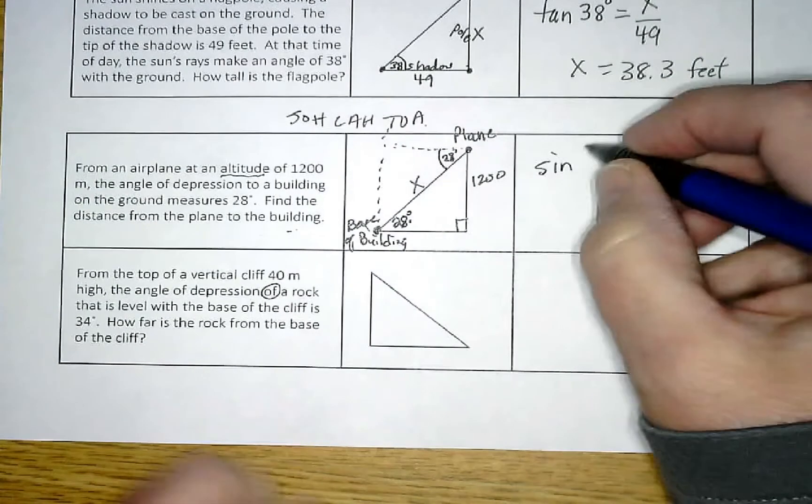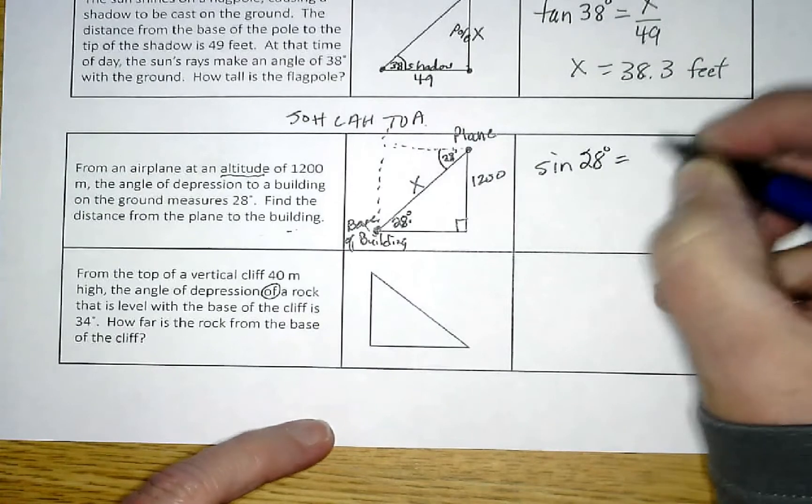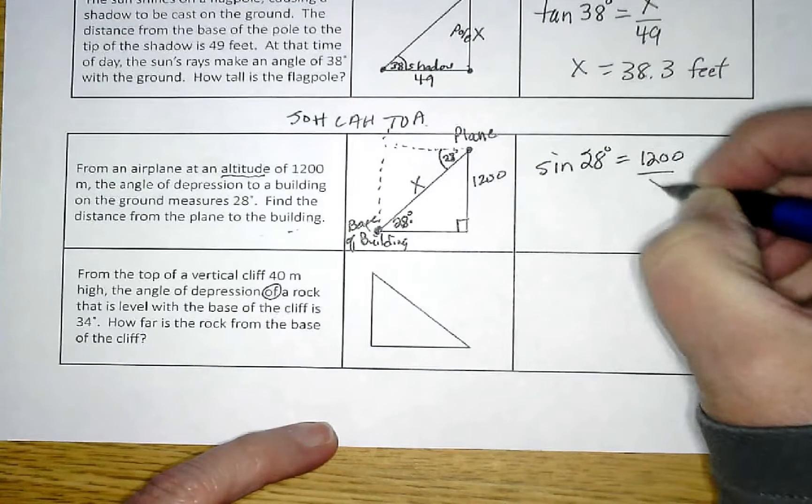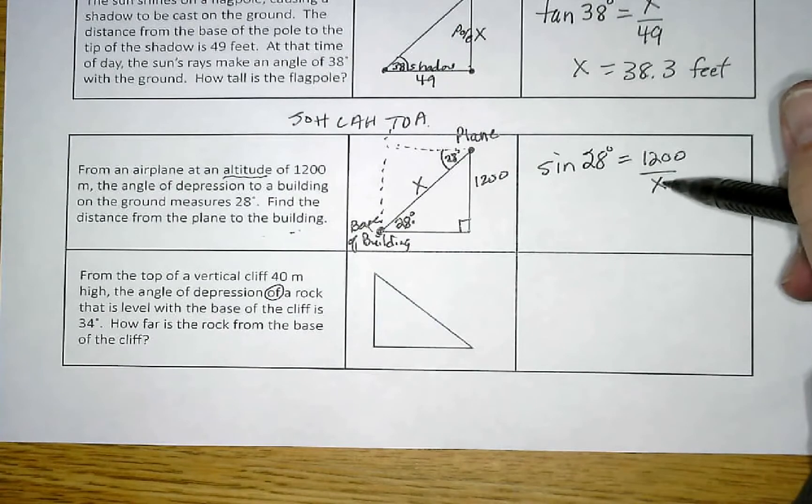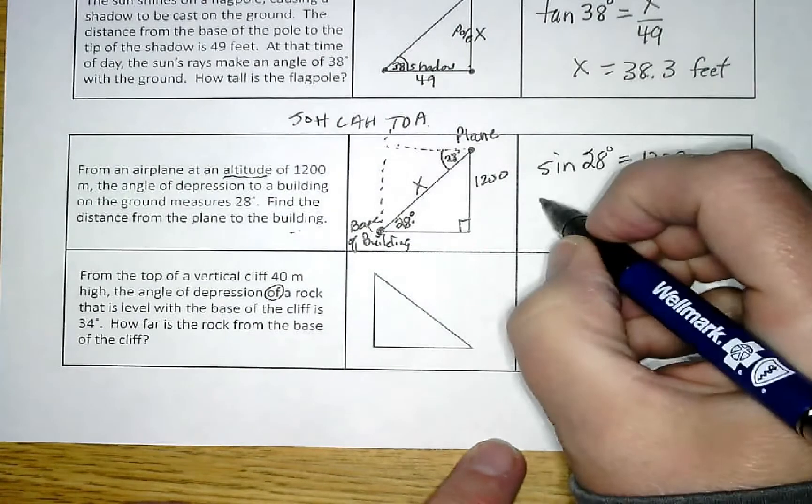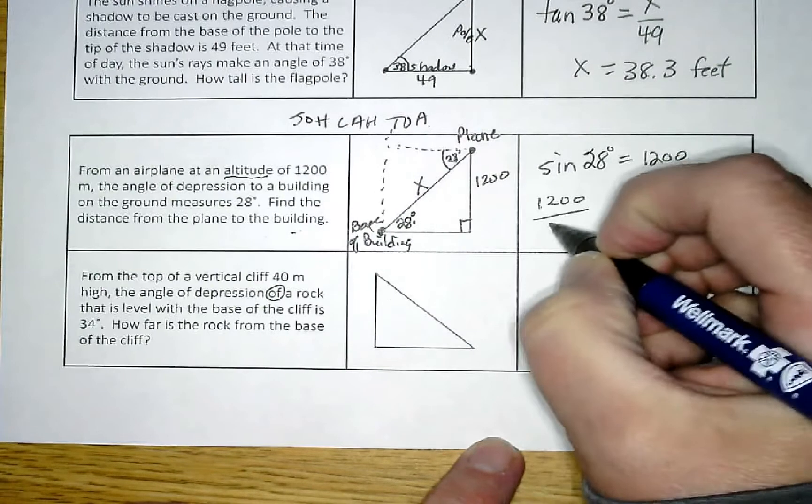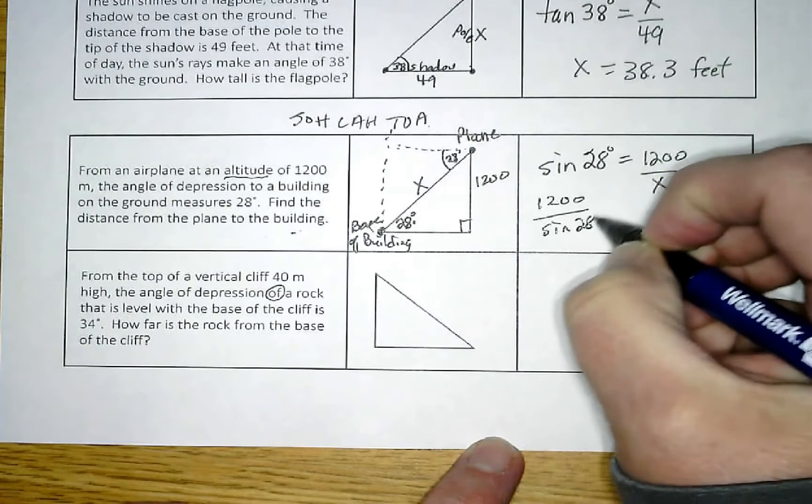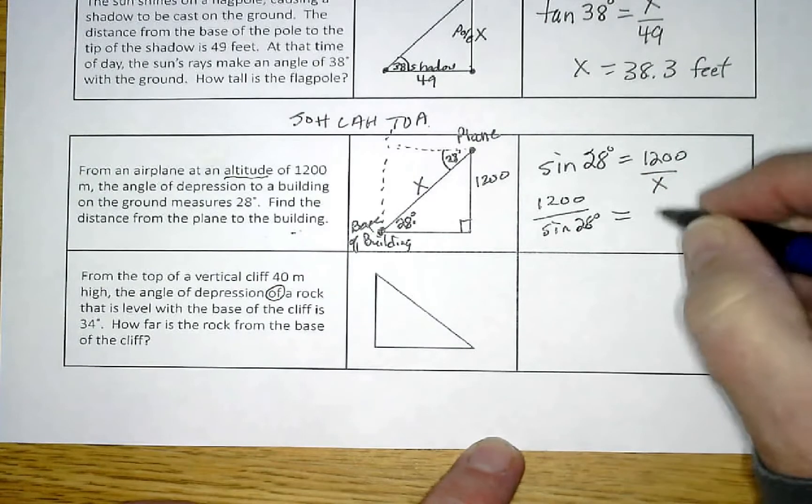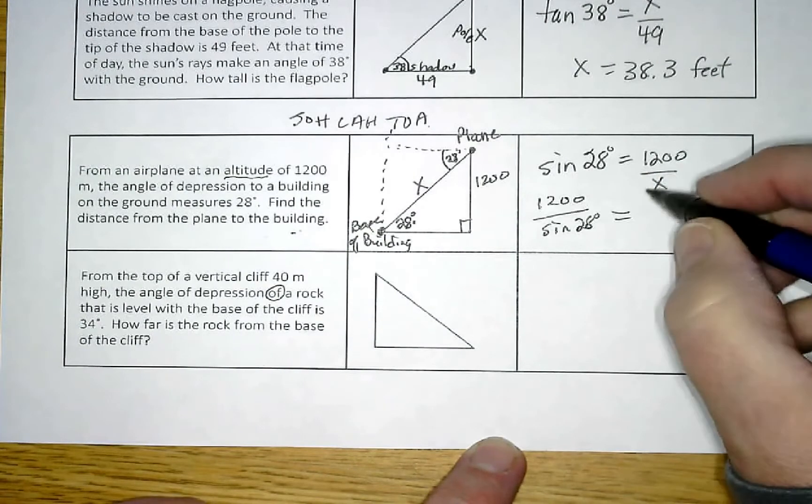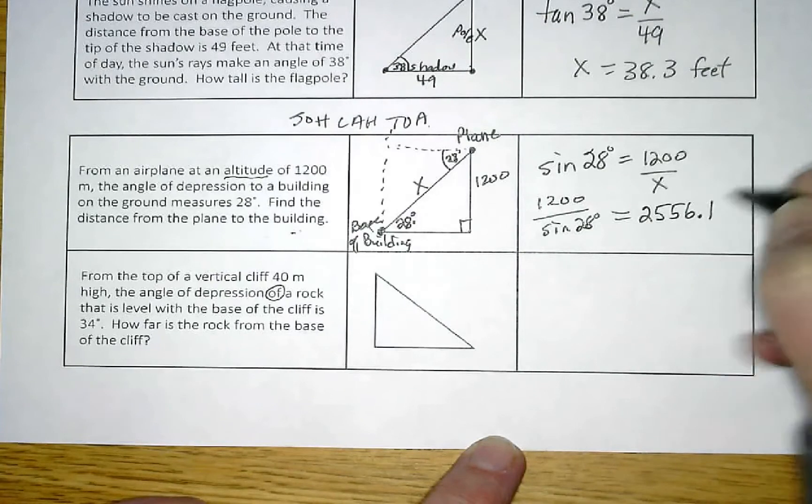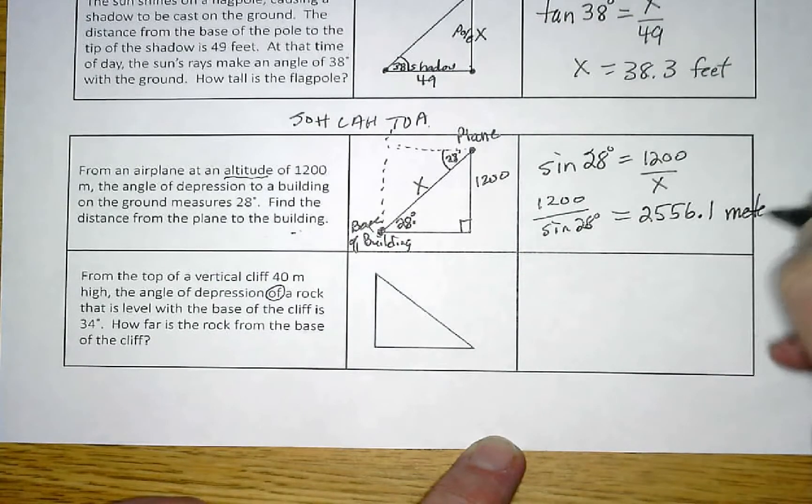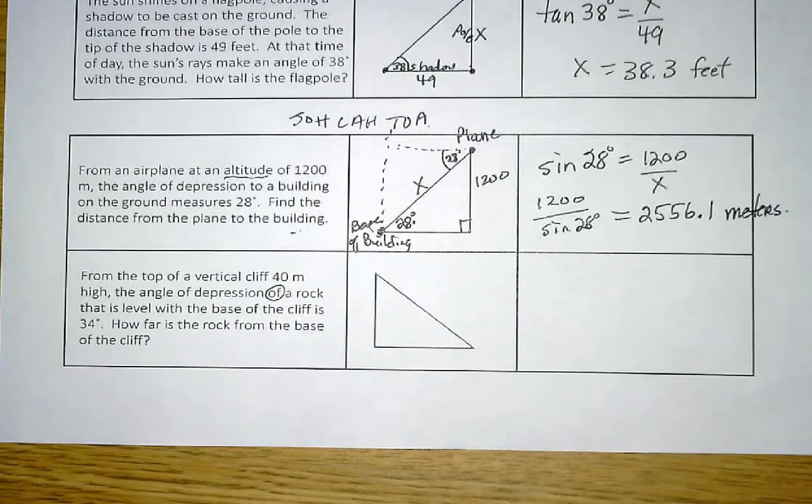Sine 28 degrees equals 1200 over X. Since X is on the bottom, this is going to be a divide problem. I would take 1200 divided by sine of 28 degrees, that's going to give me X which is 2556.1 meters. That makes sense that it would be more than 1200 because this is the hypotenuse of the triangle.